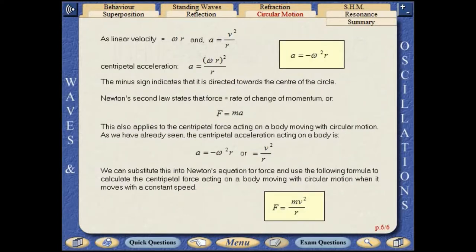As linear velocity equals omega r and a equals v squared over r, centripetal acceleration a equals omega r squared over r. In the equation a equals minus omega squared r, the minus sign indicates that the acceleration is directed towards the centre of the circle.